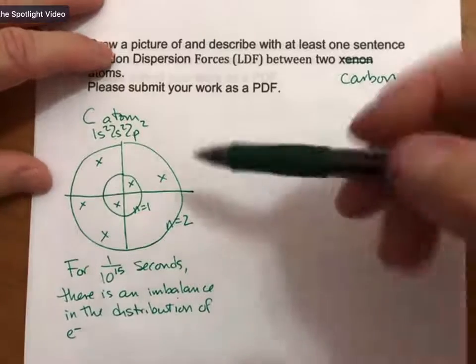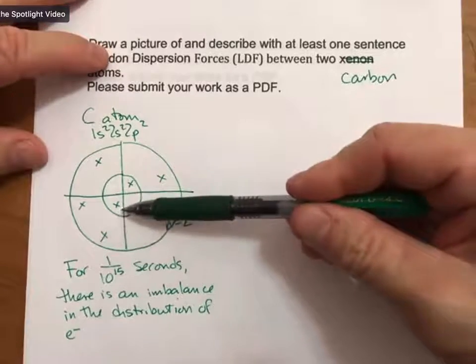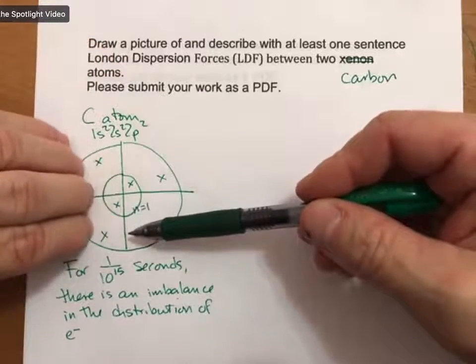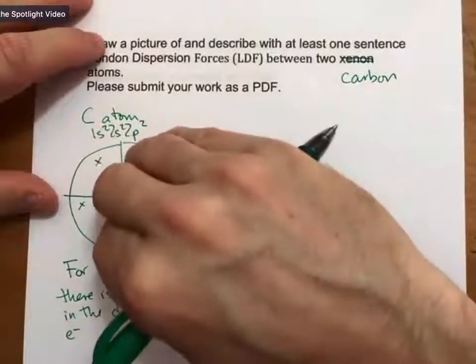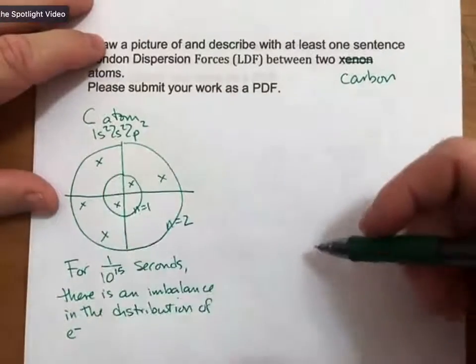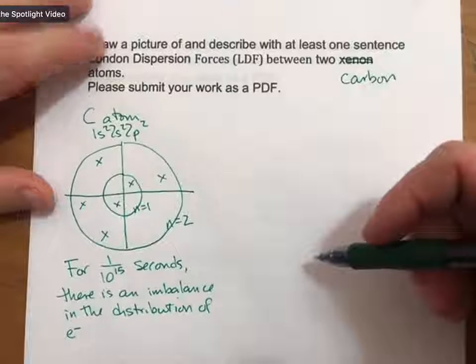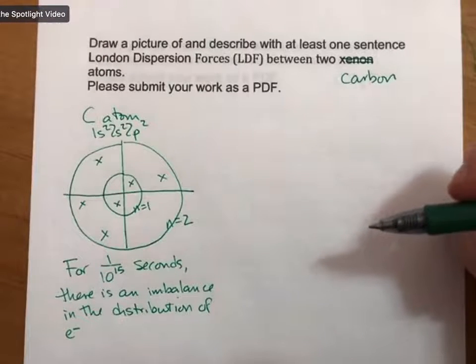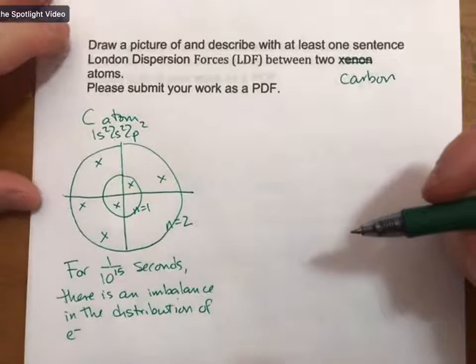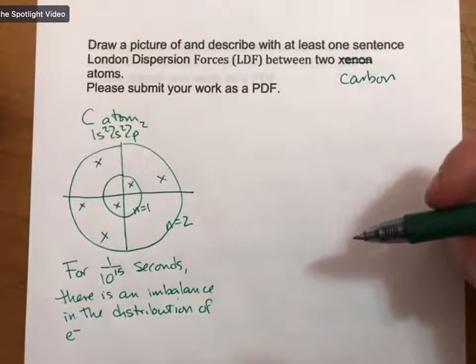And that imbalance is represented by the fact that there are four electrons on the left-hand side and two electrons on the right-hand side of the atom. And it just so happens that, you know, I know we think of electrons as probabilities, but even those probabilities can have a slight imbalance.